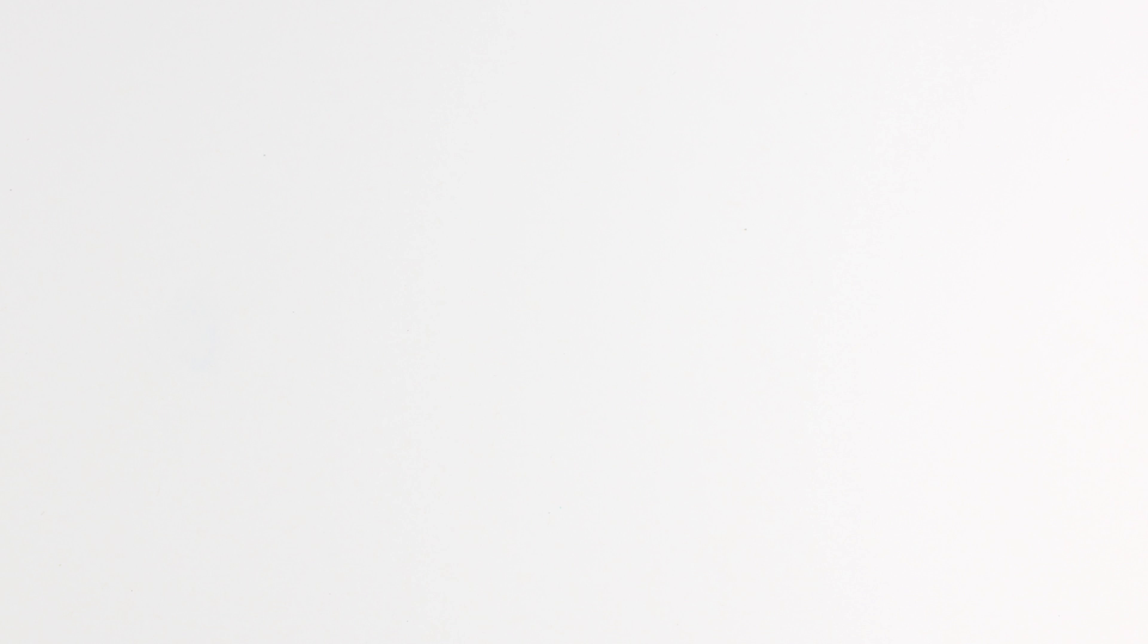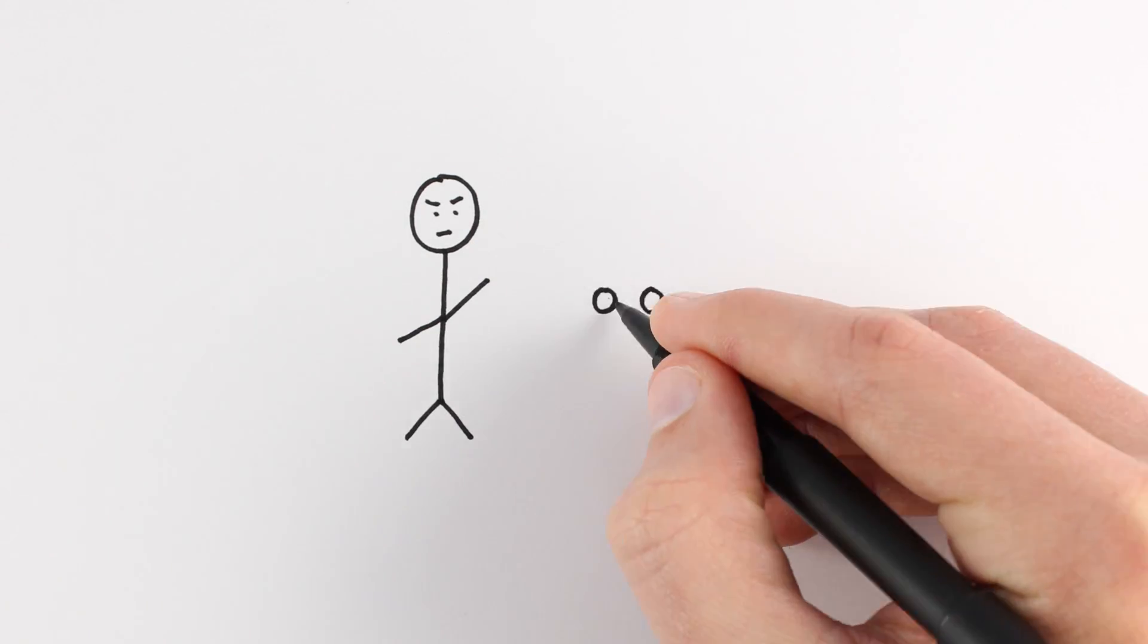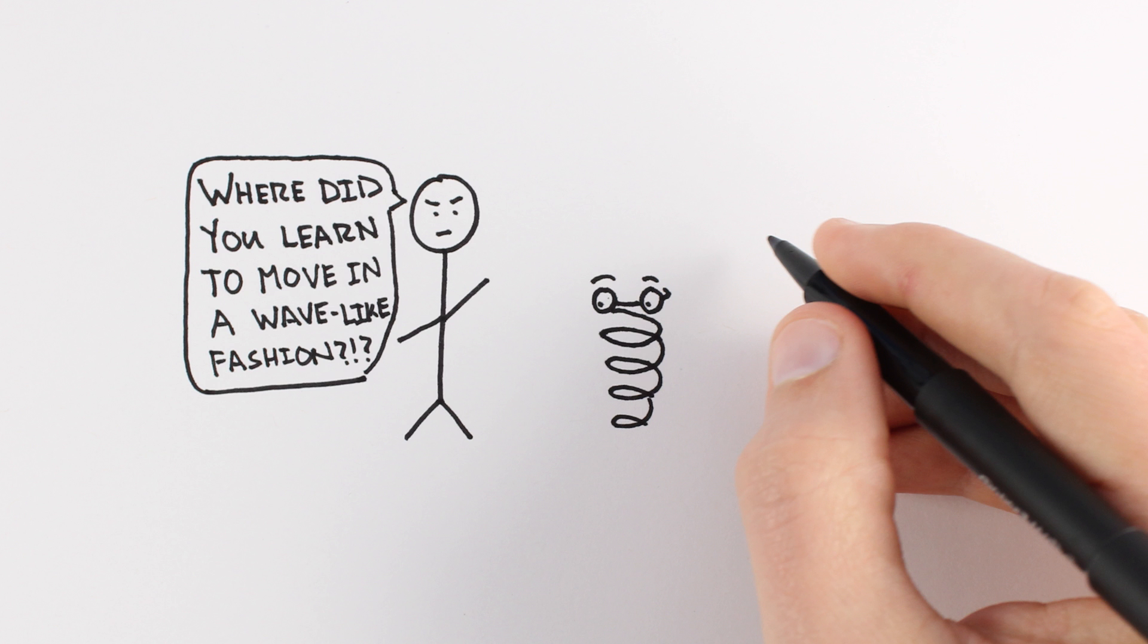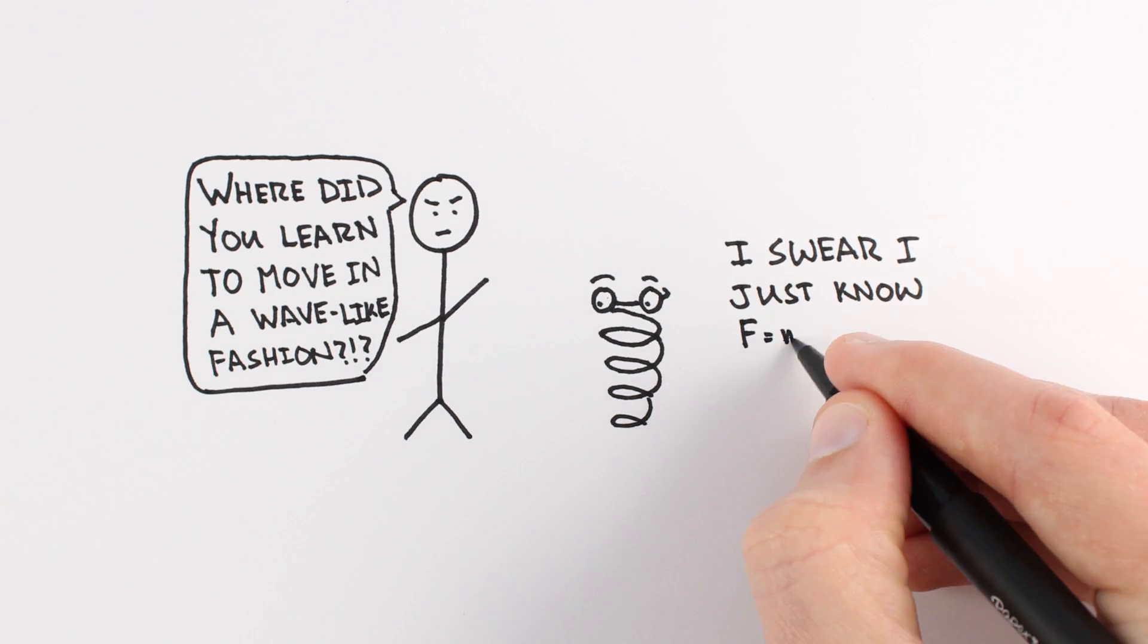But how can a system like this know how to move? And why does it choose to move with the motion of a wave? Is there something special or fundamental to nature about this shape? Or is it just convenient in this case?